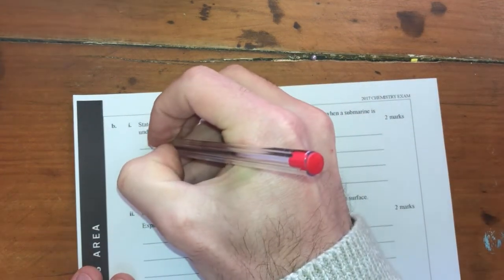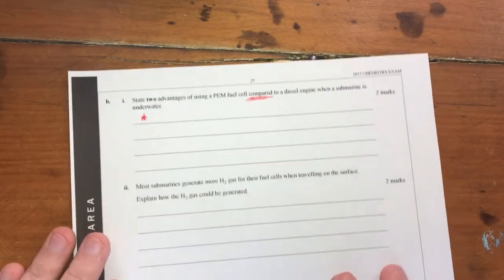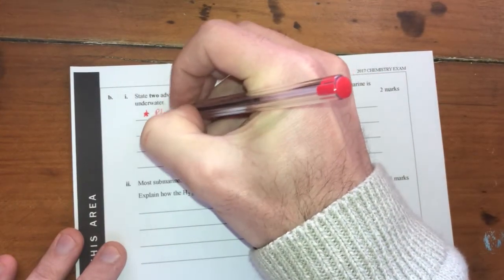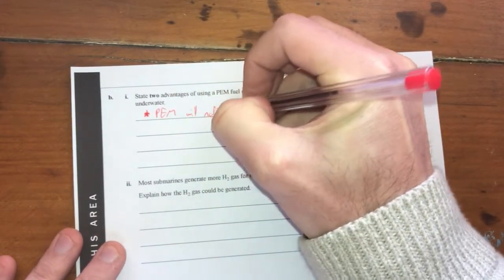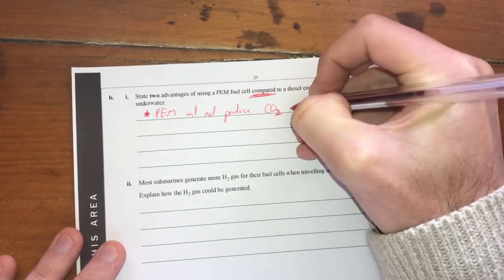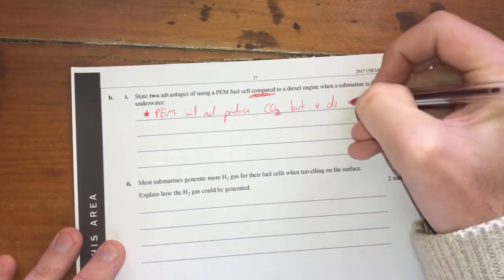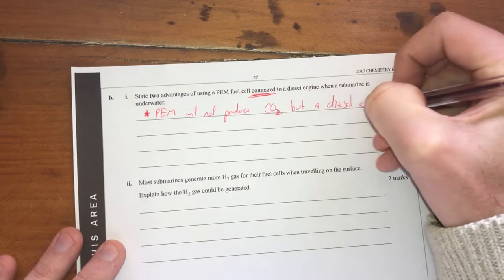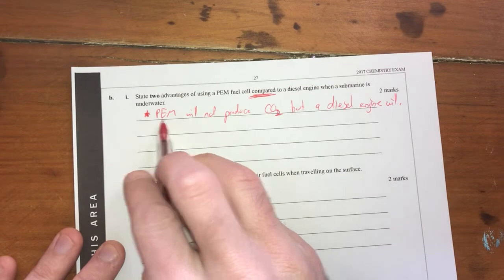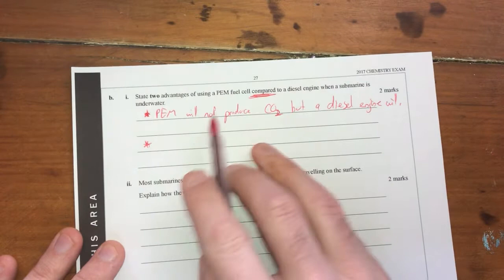So one clear obvious thing, anytime you're looking at, I guess, hydrogen fuel cells as a method of producing energy, it doesn't produce carbon dioxide, alright? So therefore, a PEM will not produce CO2, but a diesel engine will. Diesel engine will. So again, in comparison, I need to talk about both a PEM and a diesel engine in each of my responses.